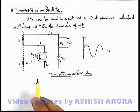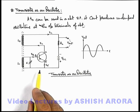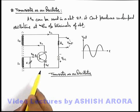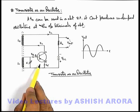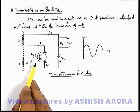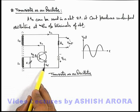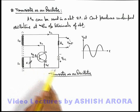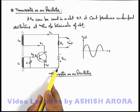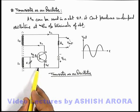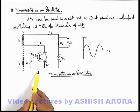Here we can see the circuit in which we are using a transistor as an oscillator. This is a common circuit in which the transistor is being used with the emitter common with both the base and collector terminals — this is similar to a common emitter connection of a transistor.